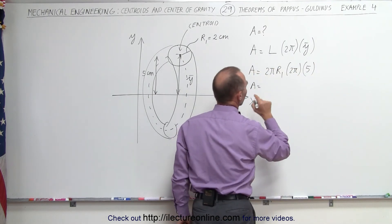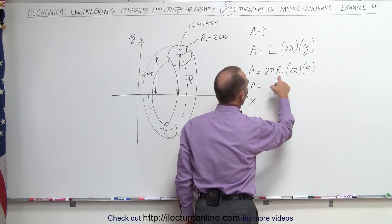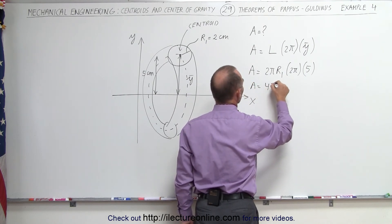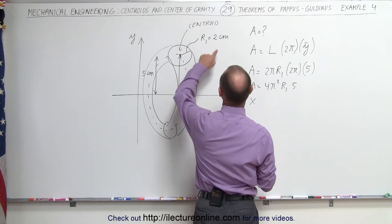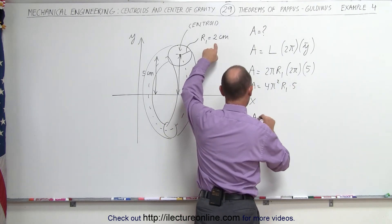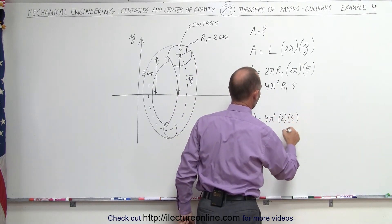The area then equals 2π times 2π, 4π² times R1 times 5. Since R1 is 2 centimeters, let's plug that in. A equals 4π² times 2 times 5.